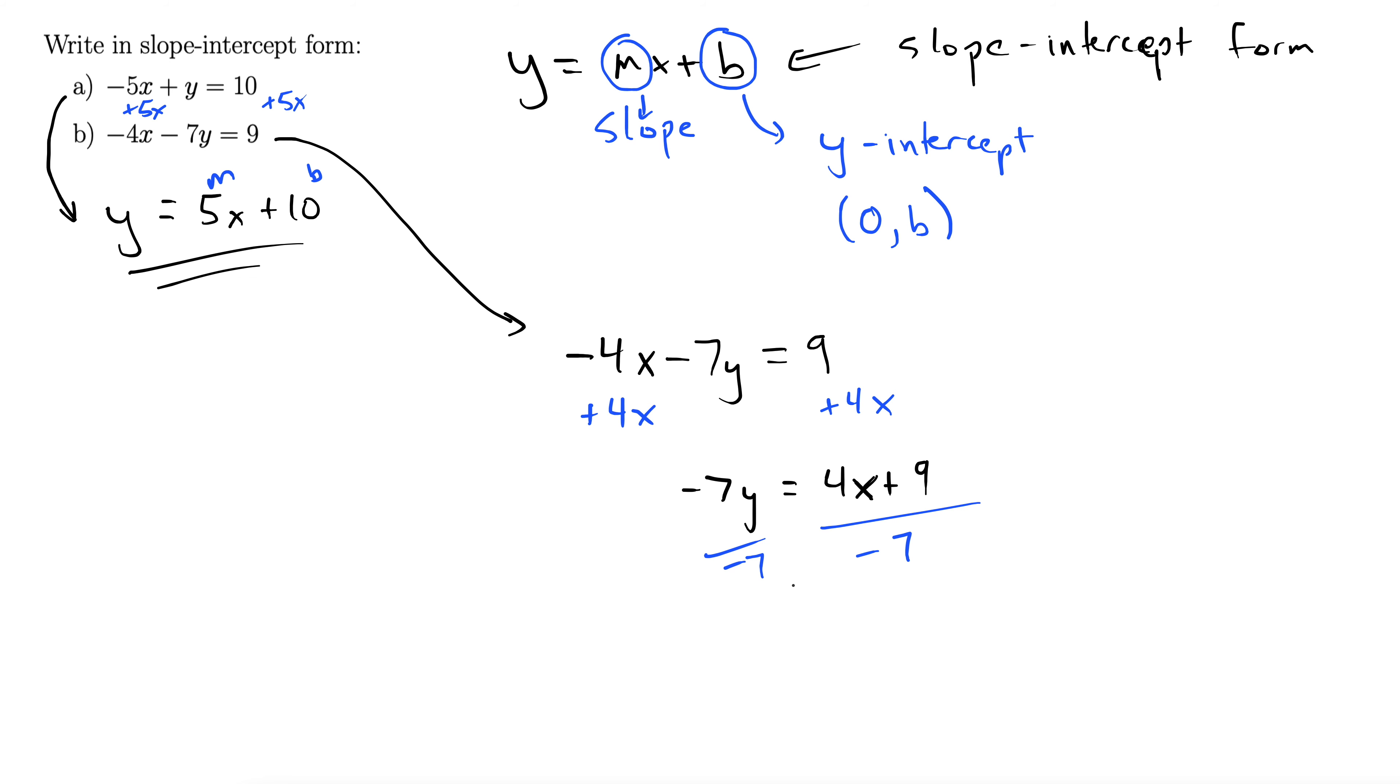You want to break this up - we want it to be mx plus b form. So the final answer is y equals negative 4/7 x minus 9/7. You wouldn't want to put it all over a single negative 7 because you want it broken up like this. And there's our final answer.